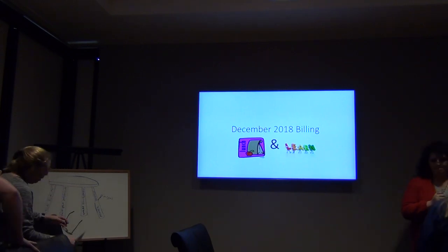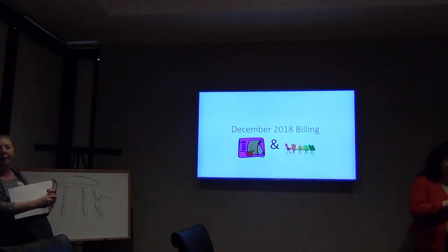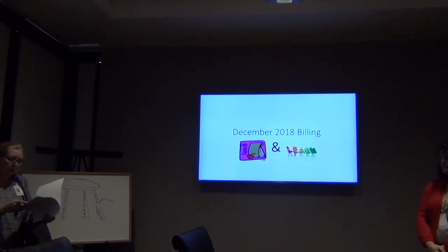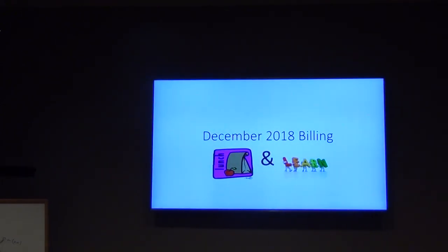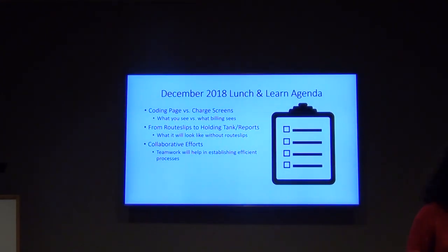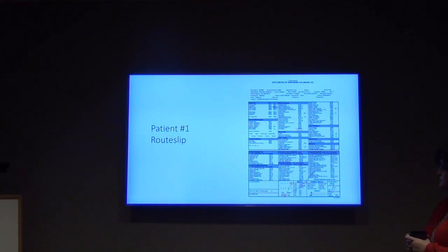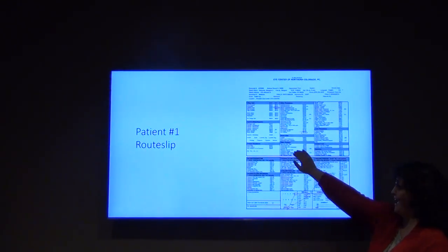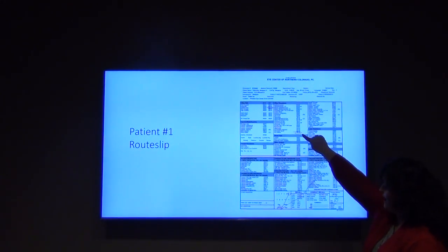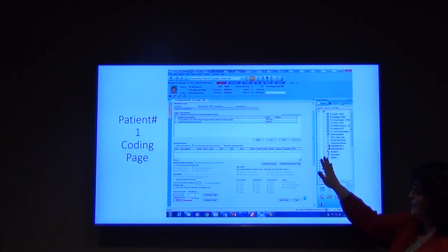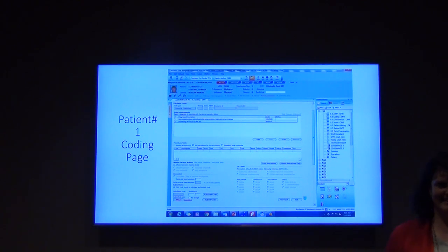Becky Miller put together examples comparing what we get with route slips versus what we see on the coding page versus what billing has to work with when they accept charges. Ruth, go to patient number one's route slip. You can see an office visit and an OCT circled on the route slip. On the next screen is the coding page. Can anyone tell me what is missing? The OCT.